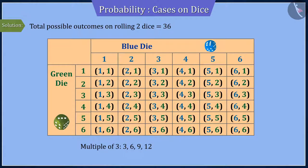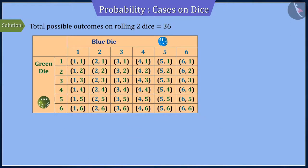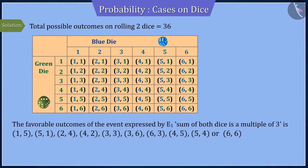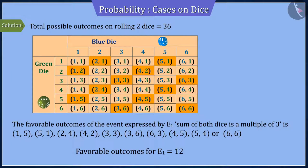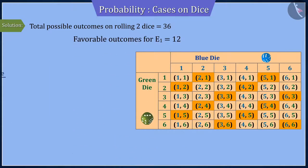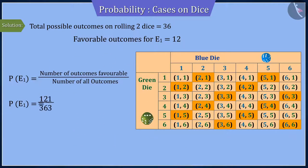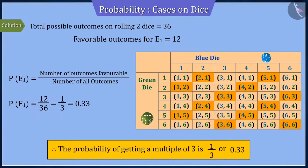Note that maximum 12 is taken here because rolling two dice gives the maximum sum of 12, which is a multiple of 3. From the table, we get 12 such results corresponding to event E1. Hence, by the probability formula, the probability of getting a multiple of 3 is 1 by 3 or 0.33.